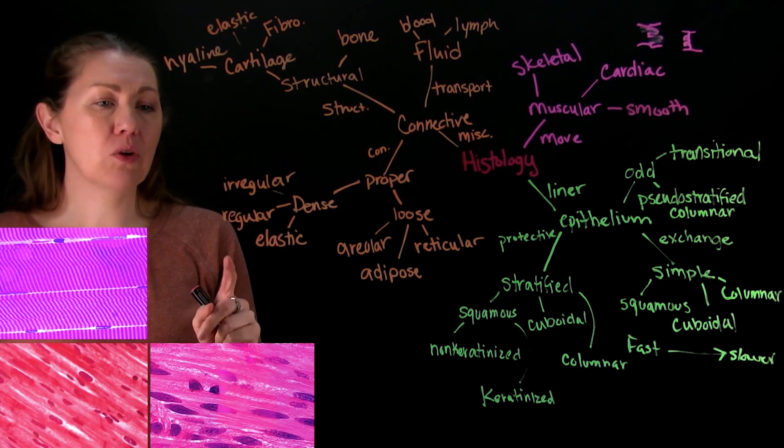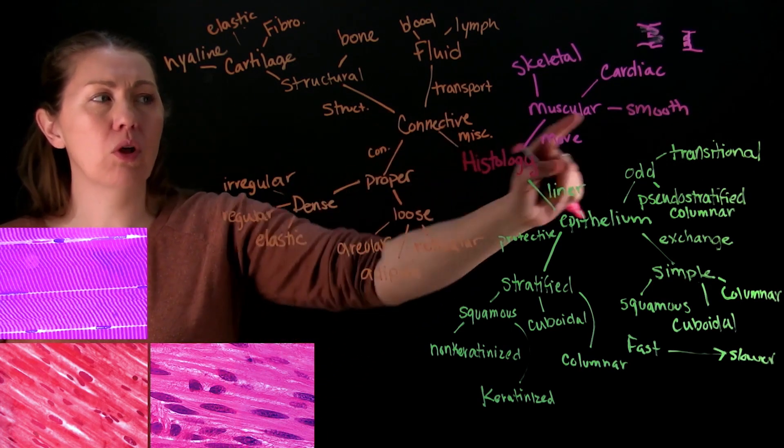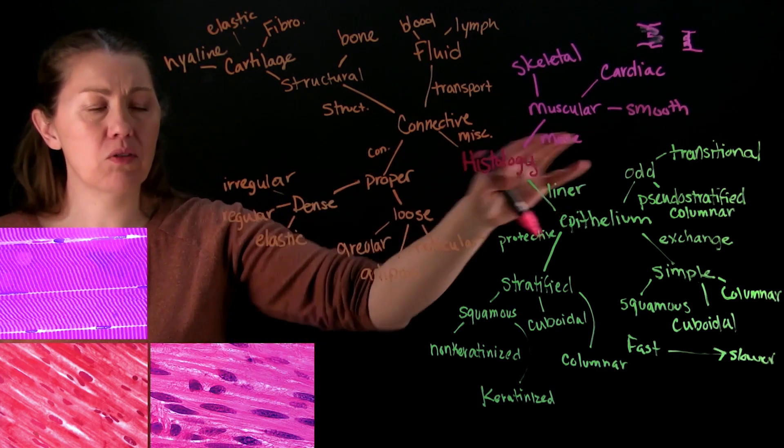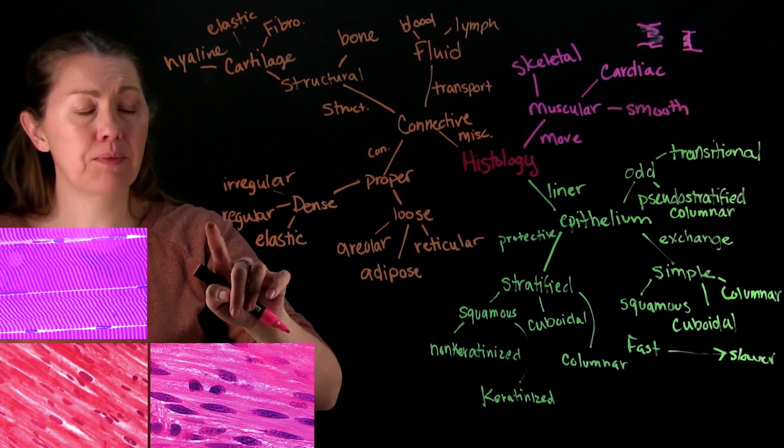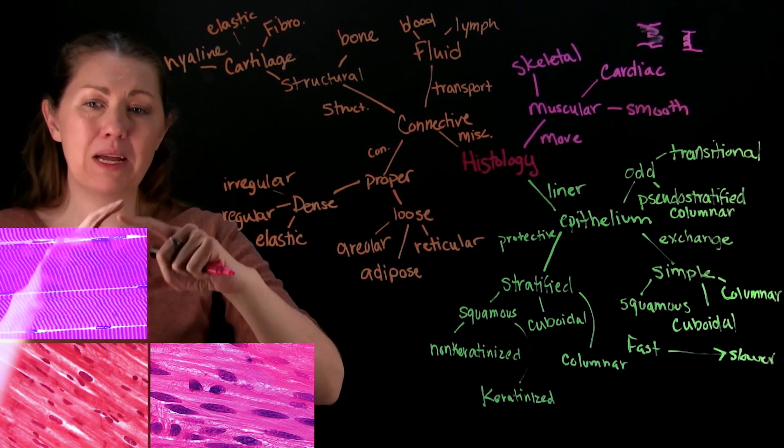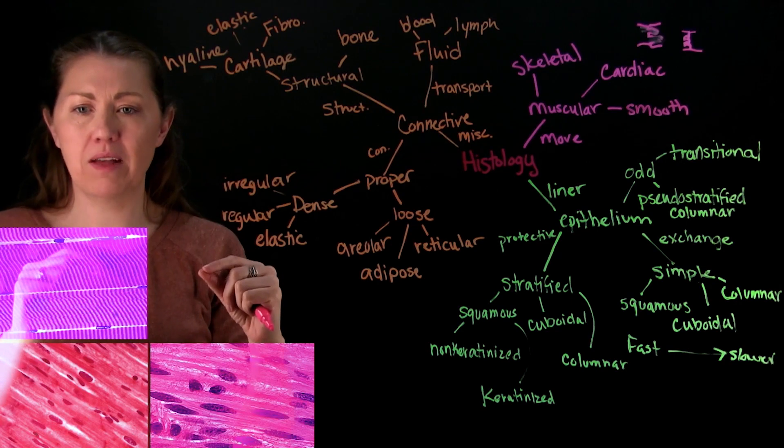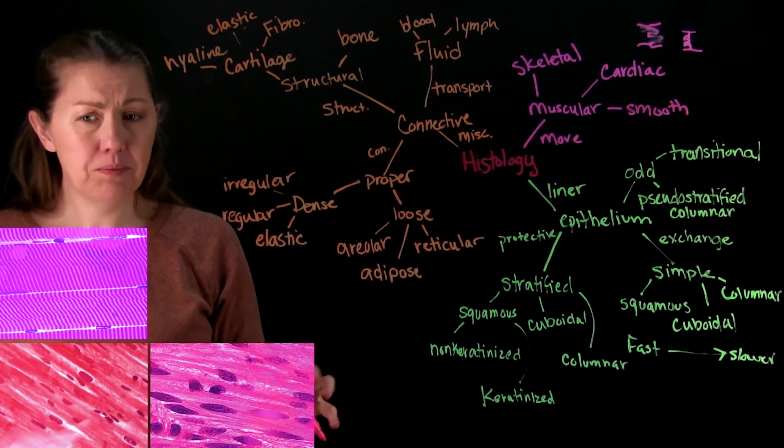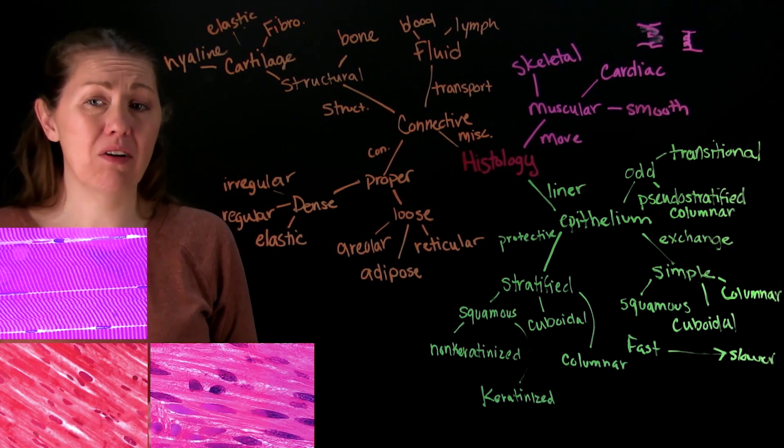Now one tissue that is really kind of close in looking and close in appearance is the dense regular. The difference here is that the nuclei aren't squished, they're still going to maintain kind of a little poofier in the middle so they taper off on the sides. So smooth muscle is going to be all those involuntary places that aren't the heart.